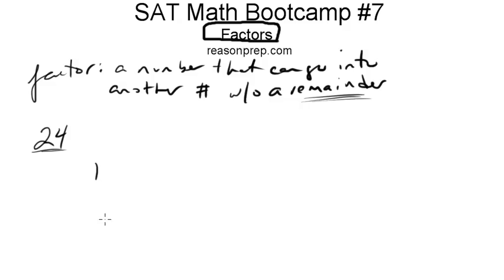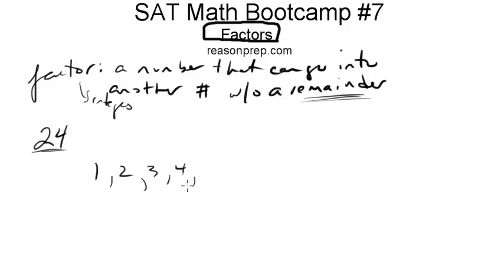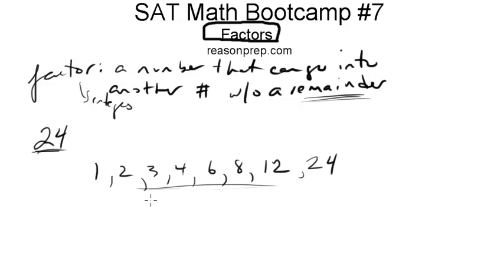So what I do with 24 is I say okay, 1 is always a factor of every single number, because 1 can go into any integer. So 1 works, and then I just go up the scale: 2 goes into 24, so does 3, so does 4, 5 does not, 6 does, 7 doesn't, 8 does, 9 doesn't, 10 doesn't, 11 doesn't, 12 does. And the secret is once you get to 12 — the halfway point, which is 24 divided by 2 — you're done, because nothing else is going to go in equally. So you end with 24 itself. So 1 and itself are always factors, and the rest are whatever ones go into it equally.